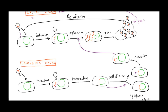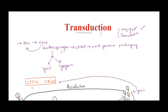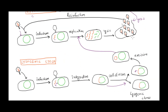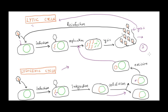Transduction is a process that occurs as a result of an error during viral genome packaging. Viral genome packaging happens in both the lytic and lysogenic cycles, since new viral particles are formed, packed, and released. So based on this, there should be two types of transduction — one for each life cycle.